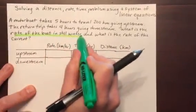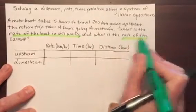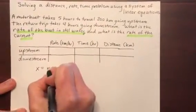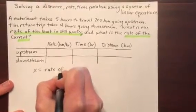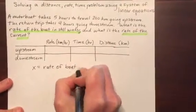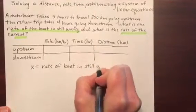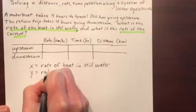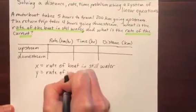The rate of the boat in still water and the rate of the current. So let's let x equal rate of boat in still water and let's let y equal the rate of the current, so how fast that water is moving.